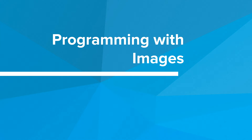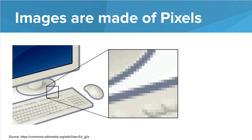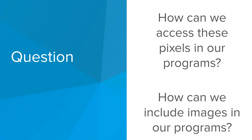Hi! In this video, we're going to look at how we can work with images in Python. We saw in the last video that images are made up of a series of pixels, so the question is: how can we access these pixels in our programs, and once we access them, how can we manipulate them to display them in Python?